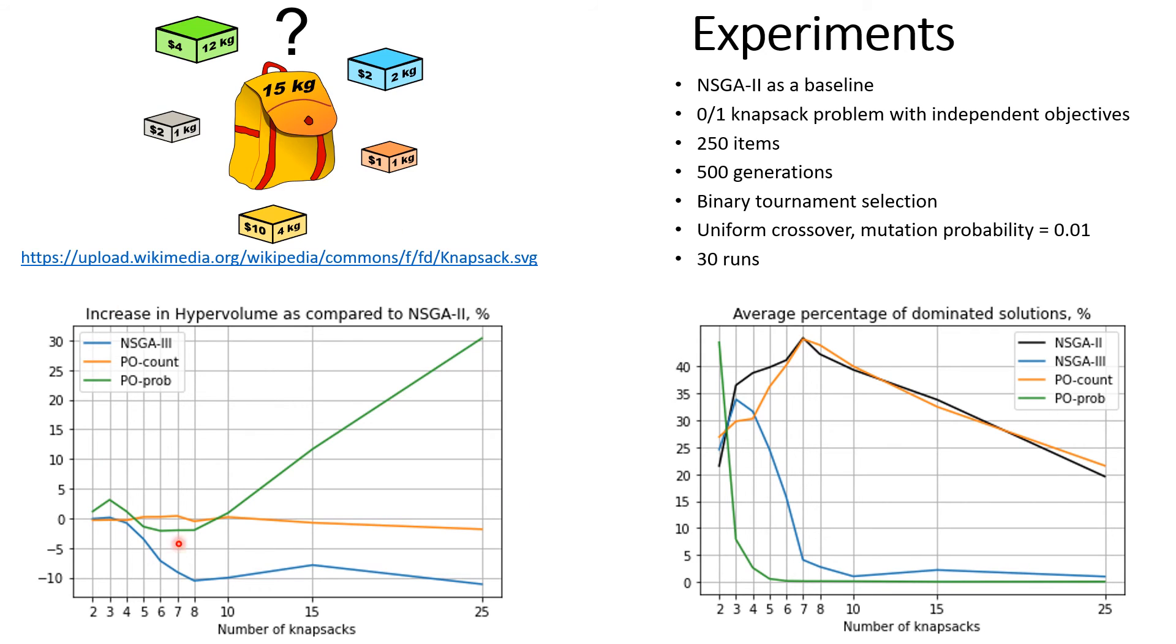The figure on the left demonstrates the relative increase in hypervolume as compared to NSGA-II in percent. We can see that the line corresponding to NSGA-III is mostly below zero, indicating the worst performance. The line corresponding to PO-count is very close to zero, thus indicating that its performance is very close to that of NSGA-II. PO-prob however allows to substantially increase the value of the hypervolume for larger values of knapsacks, reaching plus 30 percent for 25 objectives.